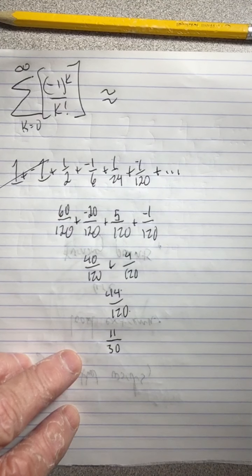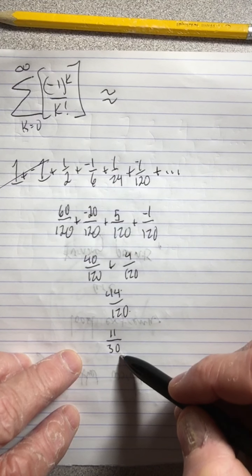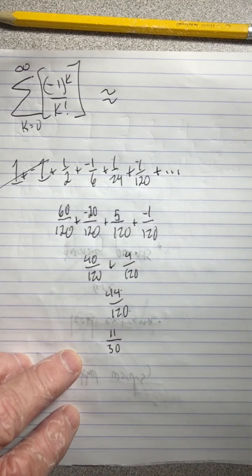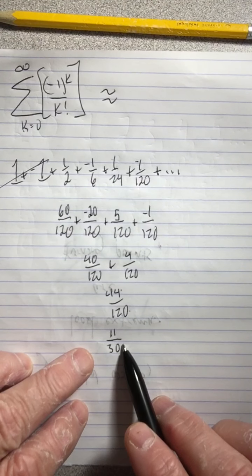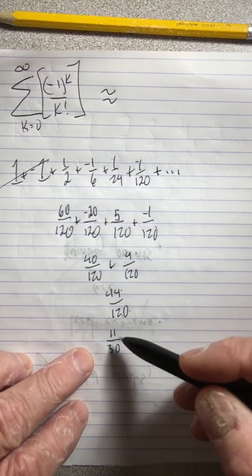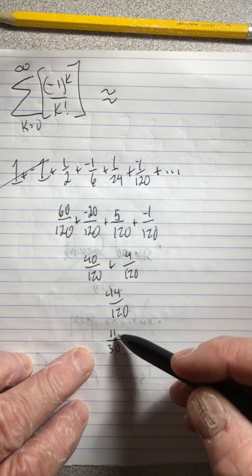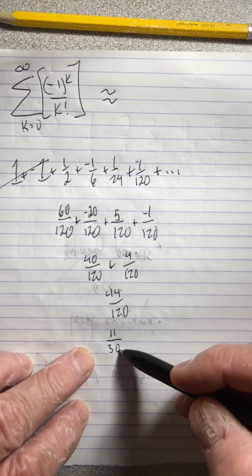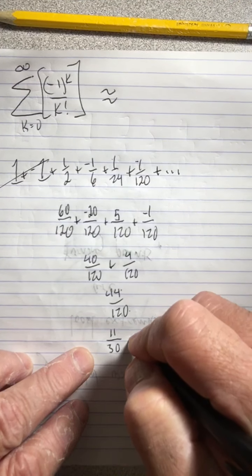So notice, if this was 10/30, it'd be a third. You'll notice it's pretty close to 1/3. Let's see, this one is actually going to be a little bigger than that, right? Because 10 over 30 would be smaller than 11 over 30, so it's a little bigger than a third.